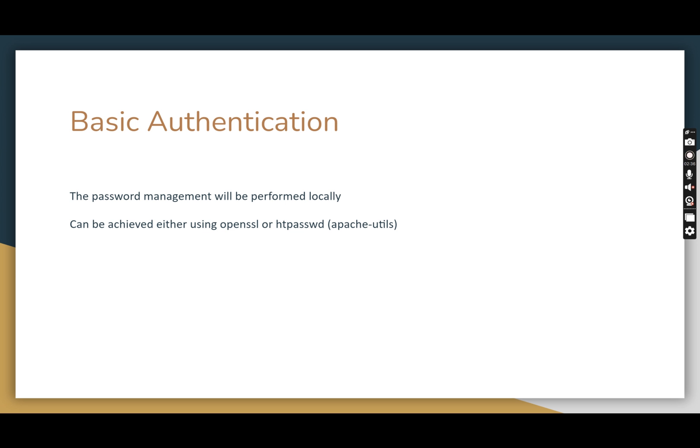In basic authentication, what we do is create a password file which will have the username and the encrypted password. Nginx will refer to this password file and verify whether the username and password combination is matching or not. The password is not stored in plain text — it is stored as a hash. The hashing mechanism uses MD5-based hashing, and similar configurations exist in Apache web server as well. Internally, Nginx compares the password hashes and verifies whether the username and password combination is matching.